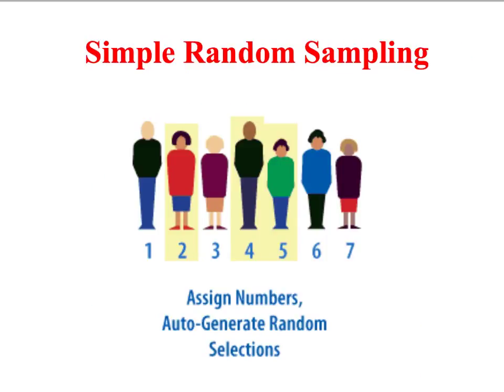The easiest way of trying to achieve a random sample is a technique called simple random sampling. As you can see from this image, what we do with this technique is assign a number to every individual on our sampling frame and then simply randomly generate a series of numbers to get our sample. If we're taking a reasonably large sample using this technique, the laws of probability should ensure that the characteristics of the sample reflect those of the target population.